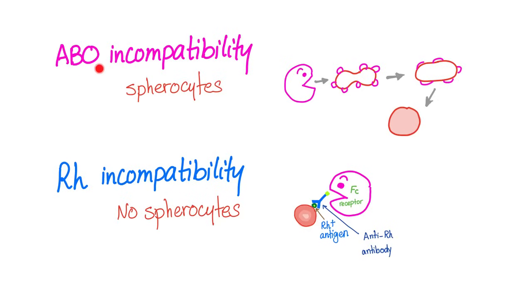In the previous video on ABO incompatibility, there was weak attachment of antigen and antibody — the macrophage consumed only tiny edges of the red blood cell, turning it into a sphere called spherocytes. In RH incompatibility, the macrophage consumes the whole red blood cell due to strong attachment, so you don't have spherocytes because the cell has already been entirely consumed.